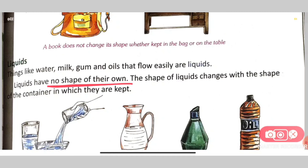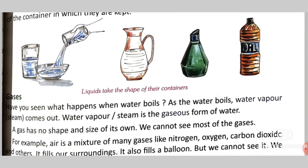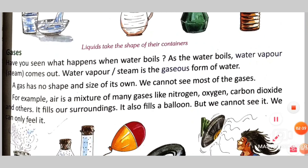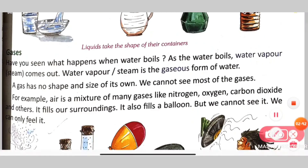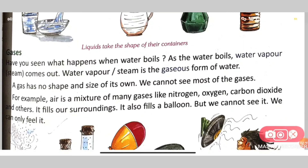Liquids do not have any fixed shape — they take the shape of the container in which they are kept. The third state is gas. Gases do not have any shape or size of their own, and we cannot see most gases, but we can feel them.